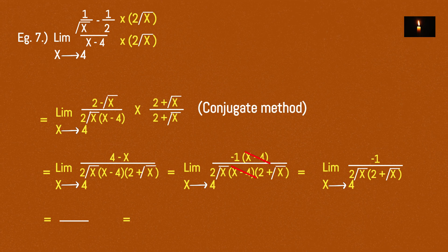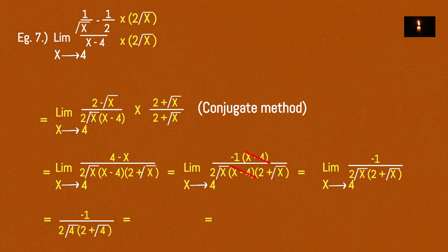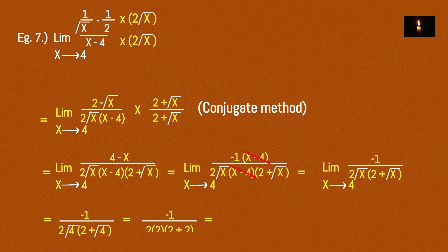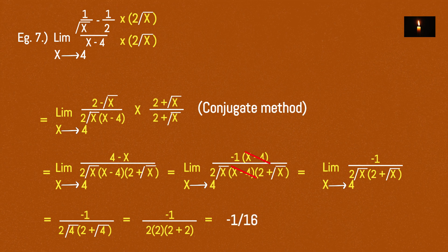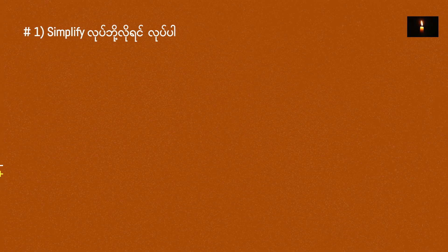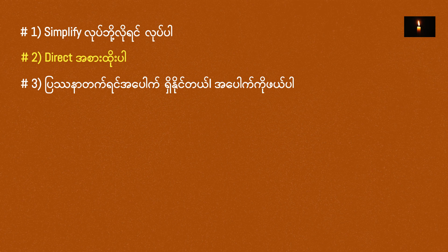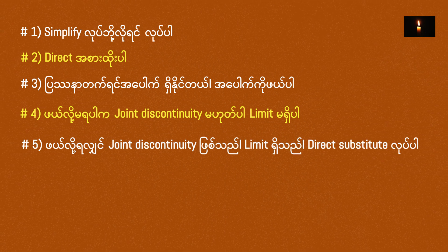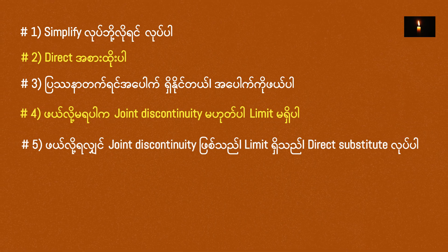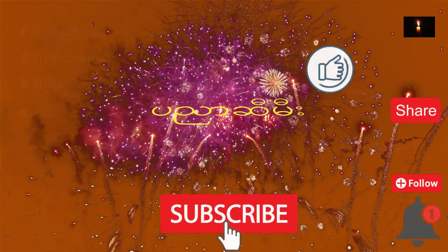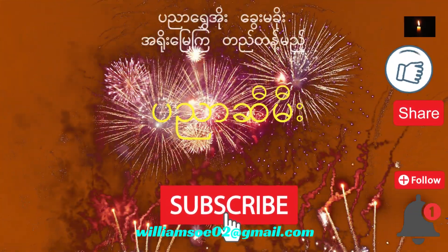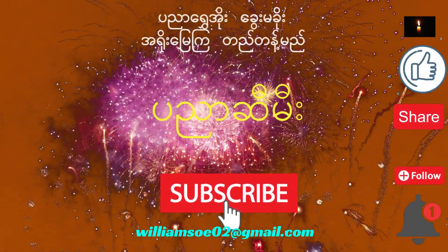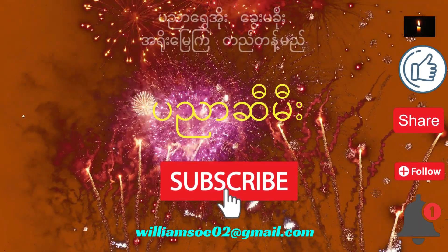So we have direct substitution. We have root x, so root x approaching 4. We have root 4. So we have root 4 — open up — root 4. Part 1. Thank you.